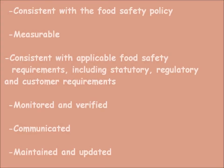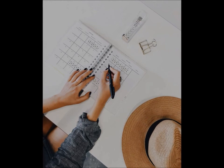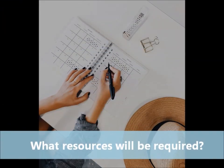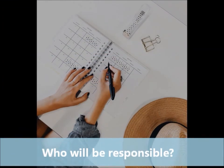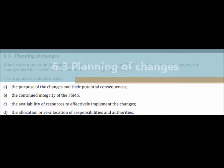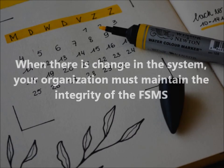The organization shall retain documented information on the objectives for the FSMS. The objectives need to be consistent with the food safety policy, measurable, consistent with applicable food safety requirements including statutory, regulatory and customer requirements, monitored and verified, communicated, maintained, and updated. Creating a simple matrix with the following criteria would help clarify the objectives: what will be done, what resources will be required, who will be responsible, when it will be completed, and how the results will be evaluated.